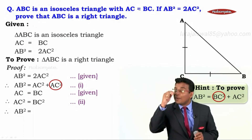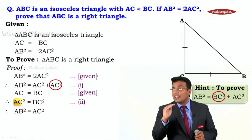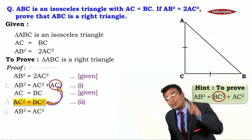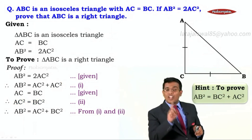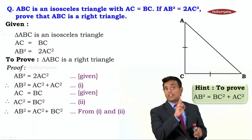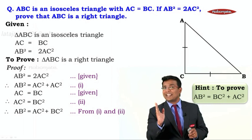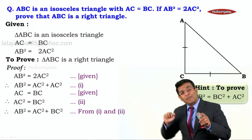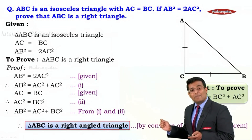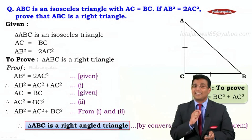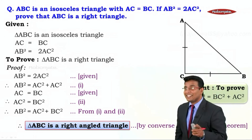Now it is easy. We substitute result two into result one. The left hand side AB square remains as it is, AC square on the right hand side remains as it is, and the second AC square is replaced by BC square. This gives us AB square is equal to AC square plus BC square — exactly what we wanted. By the converse of Pythagoras theorem, triangle ABC is a right angle triangle. Wasn't that easy?